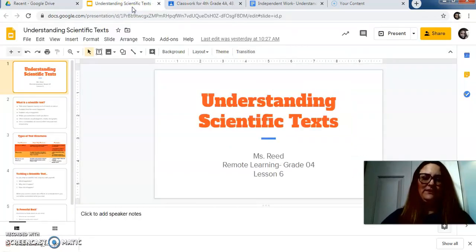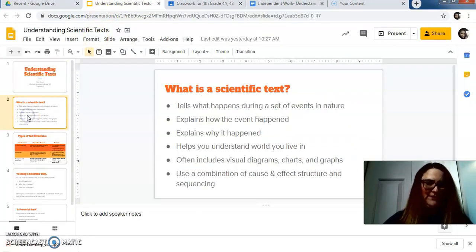So what's a scientific text? Scientific text tells what happens during a set of events in nature, explains how the event happened, explains why it happened, helps you understand the world that you live in. It often includes visual diagrams, charts, and graphs. And they usually use a combination of cause and effect structure and sequencing.